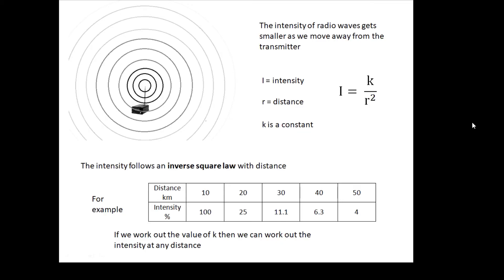In fact, if you just remember that if you double the distance then the intensity is a quarter, you might get away with that. A harder question would be to work out the intensity at any distance. To do that, you'd have to work out a value for k, as we shall see.